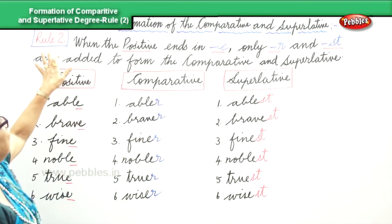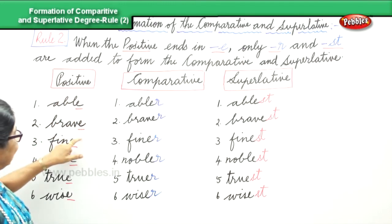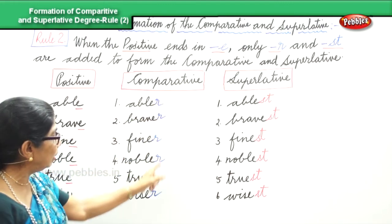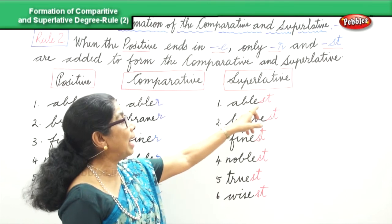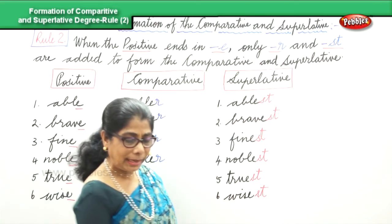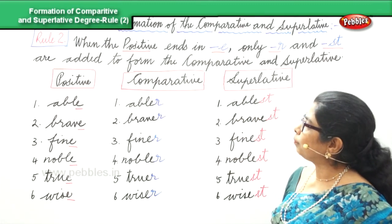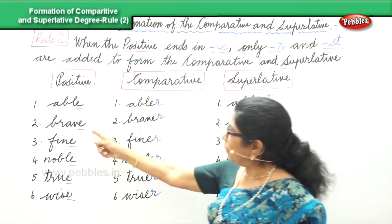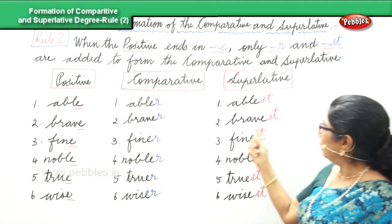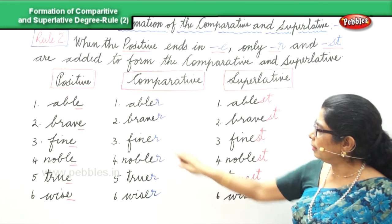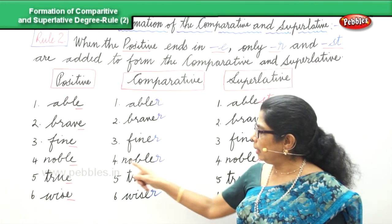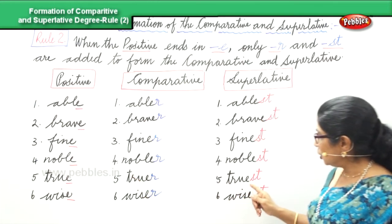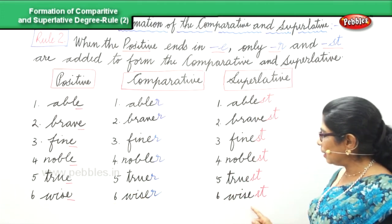The rule says: when the positive ends in E, the comparative is formed by adding R and the superlative is formed by adding ST. Now let's look at the whole thing and read it aloud. Positive — Able, comparative — Abler, superlative — Ablest. Brave, Braver, Bravest. Fine, Finer, Finest. Noble, Nobler, Noblest. True, Truer, Truest. Wise, Wiser, Wisest.